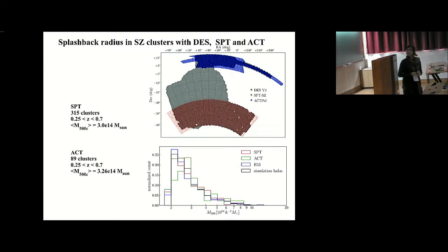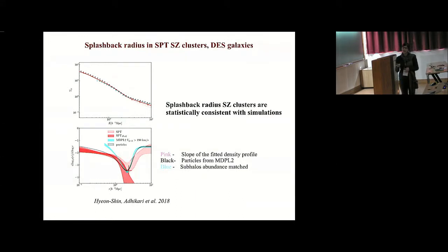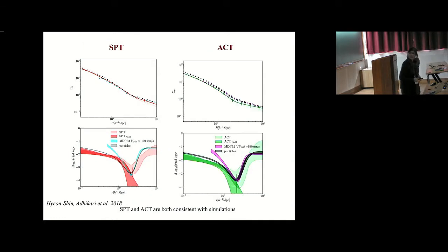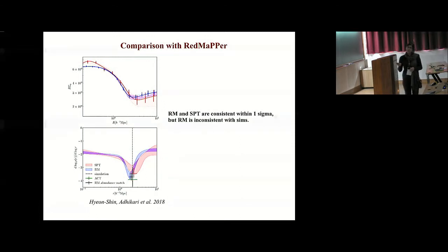For the different selection of clusters, what we found is that the splashback radius, which is the red shaded region over here, is more or less consistent with what we get from simulations, especially with the particle profile. When we measure the particle splashback radius, we find that they match almost exactly with the galaxy density profile. The location from the subhalo is consistent with what we get from these SZ clusters. However, the inner regions of the subhalo profiles from simulations are subject to a lot of disruption effects, so we don't really trust it beyond this region. These are the results from SPT and ACT, both of which are consistent with what we are getting from simulations. However, when we can compare SPT and red mapper, we still find the discrepancy, although it's not largely significant. Even though our SPT results are consistent with simulations, the location of the feature is also consistent with red mapper to one sigma.